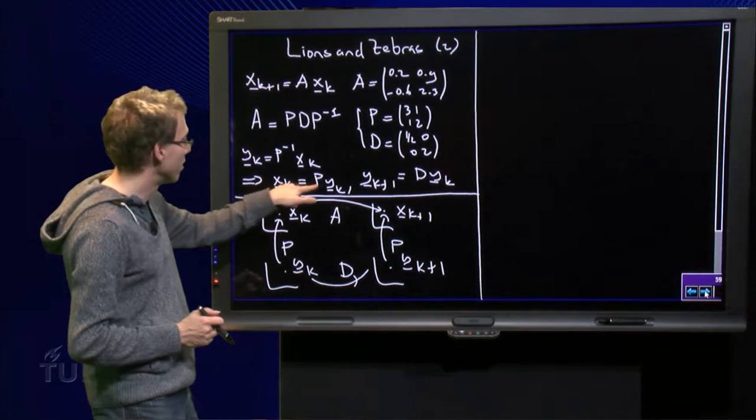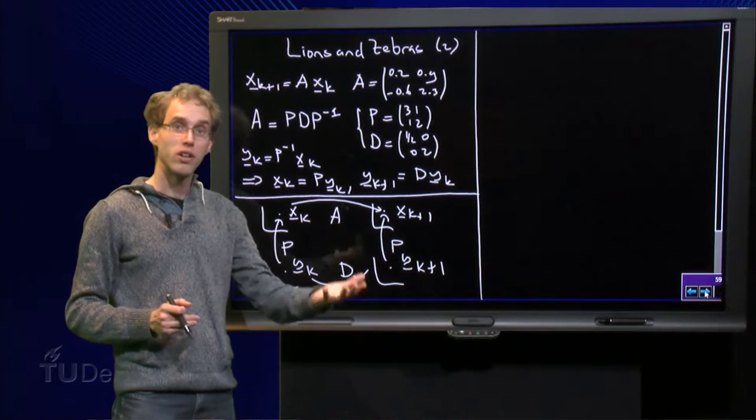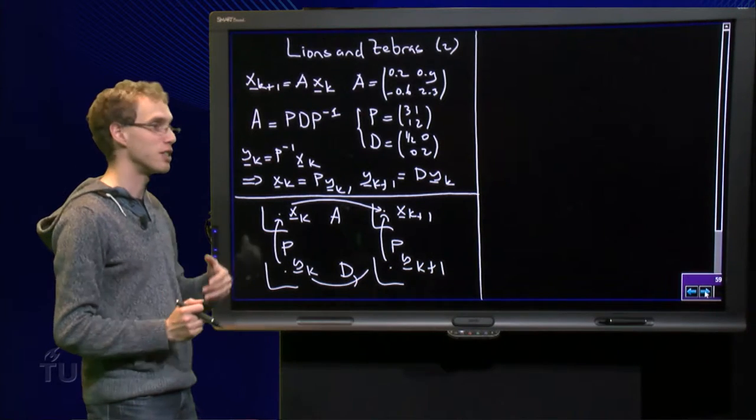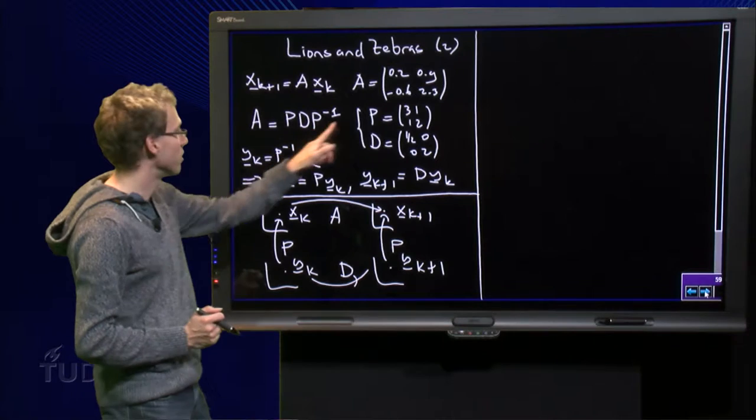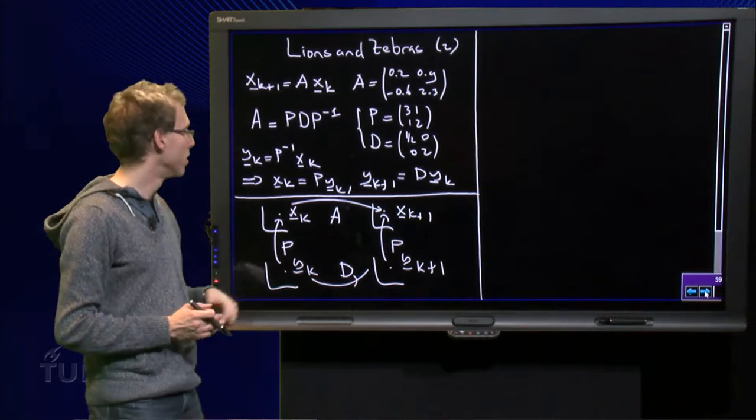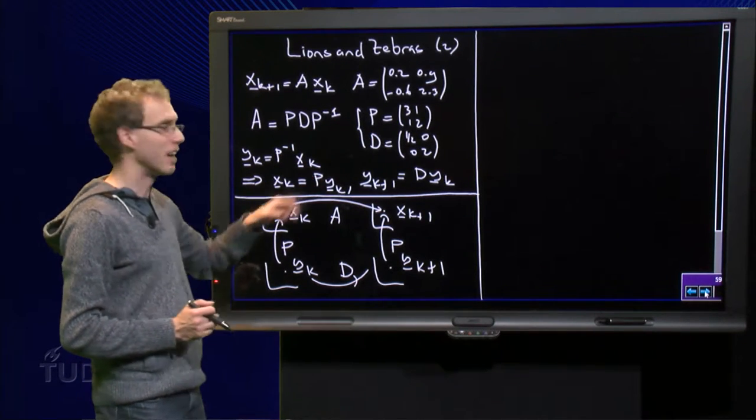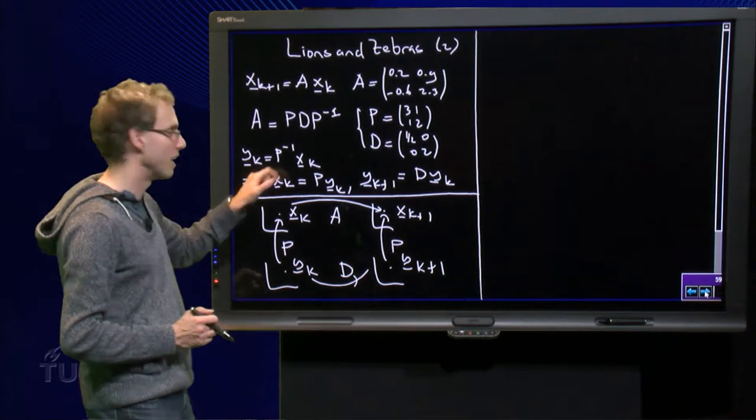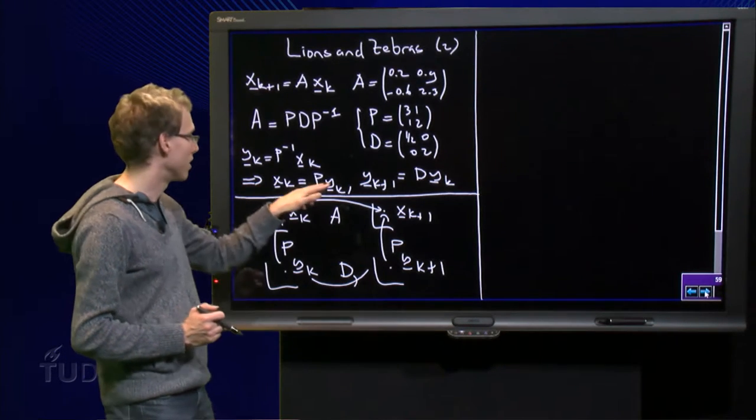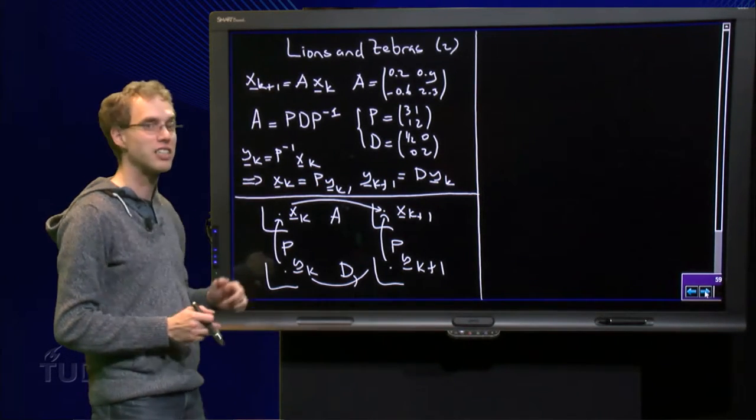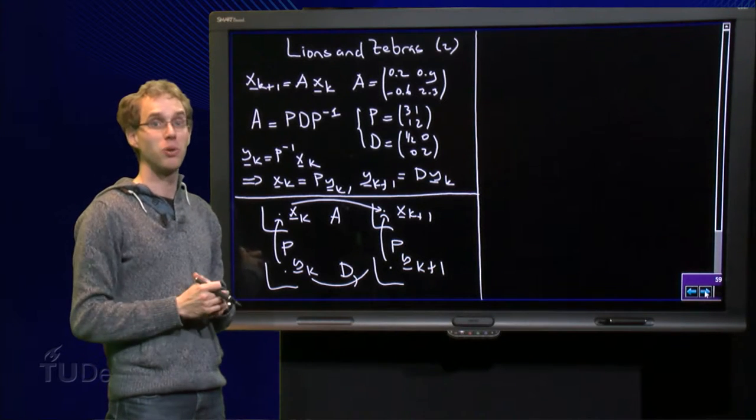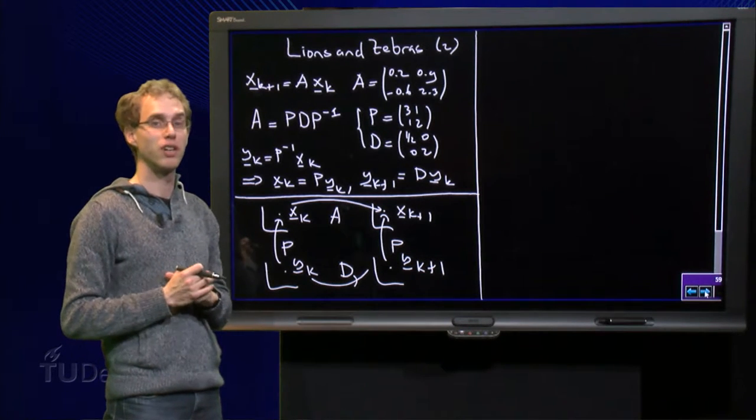Which means in fact that the y_k is the coordinate vector of x with respect to the basis consisting of (3,1) and (1,2). So if we know the y_k, we also know the x_k, because the y_k gives us the coordinates of x_k only with respect to another basis, and that is what we are going to use.